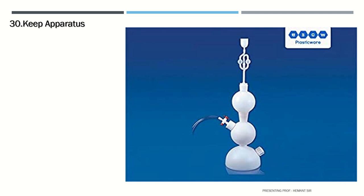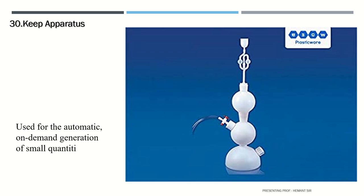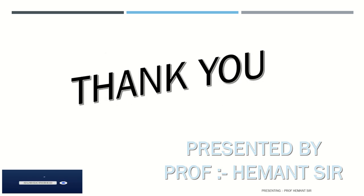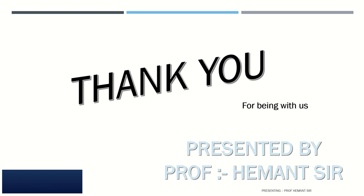The last one is Kipp's apparatus, which we use for the automatic on-demand generation of small quantities of a laboratory gas such as carbon dioxide and hydrogen sulfide. So dear students, this was a look at the glassware and apparatus found in the laboratory. In this session we reviewed some rules to follow when you enter the laboratory. Thank you for being with us — bye bye.